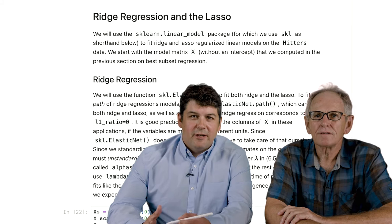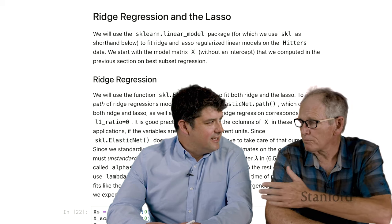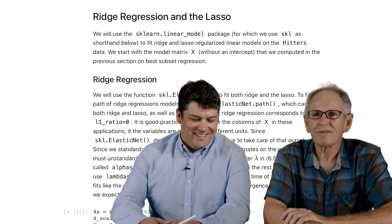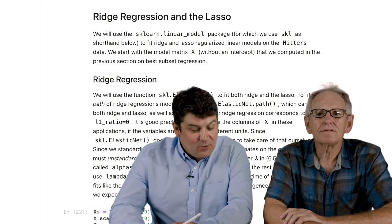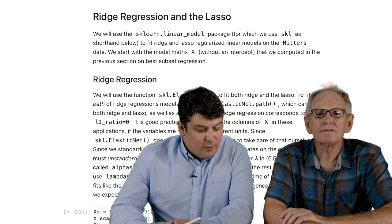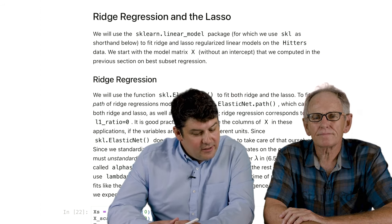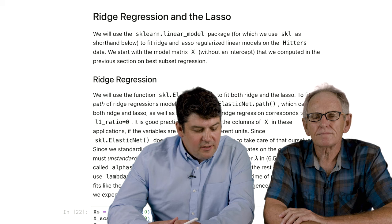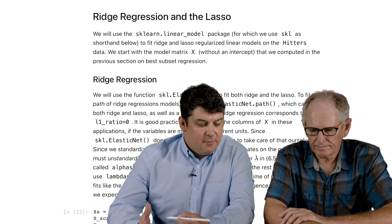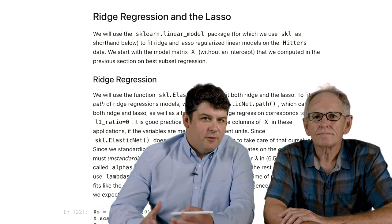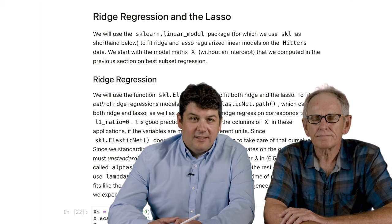So our next topic is ridge regression and the lasso. You'll be happy to know that the Python professional is back. Yes, well, thank you, Trevor. Okay, so we just saw forward stepwise selection, which gives us a way to choose important variables in a model. And we'll see these other two methods, ridge regression and the lasso. Ridge regression isn't really a selection method, but the lasso is something like forward stepwise that it does model selection as well as estimation.